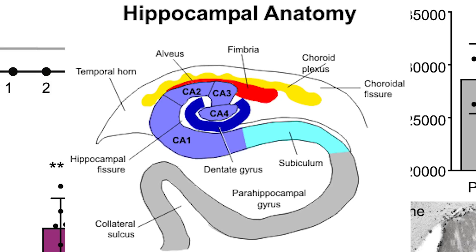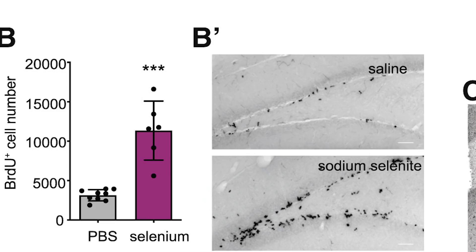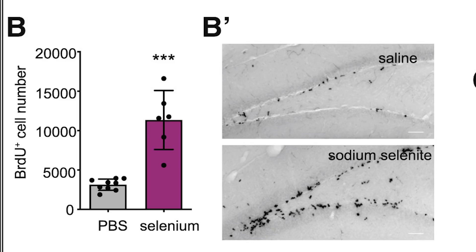In the dentate gyrus, a region adjacent to the hippocampus and known to contain neural progenitor cells, they saw a threefold increase in the number of proliferating cells following this increase in selenium. This region of the brain is also involved in episodic memory and exploration of novel environments.